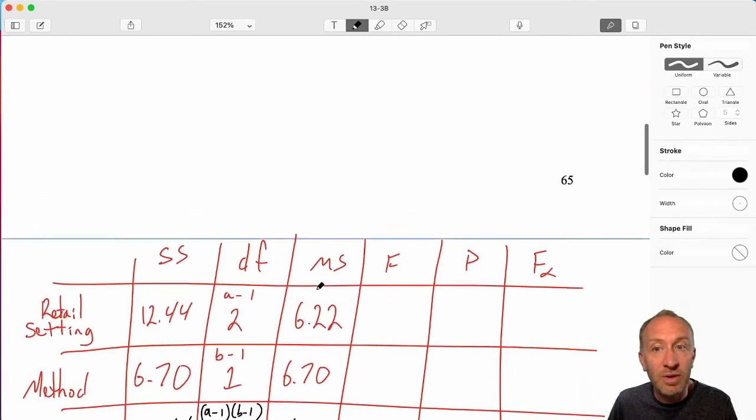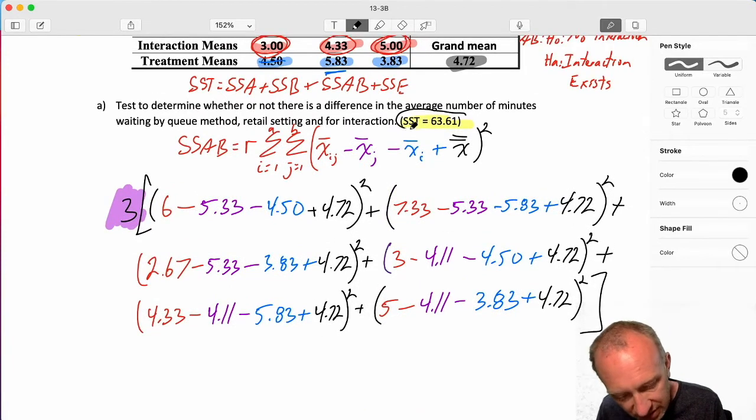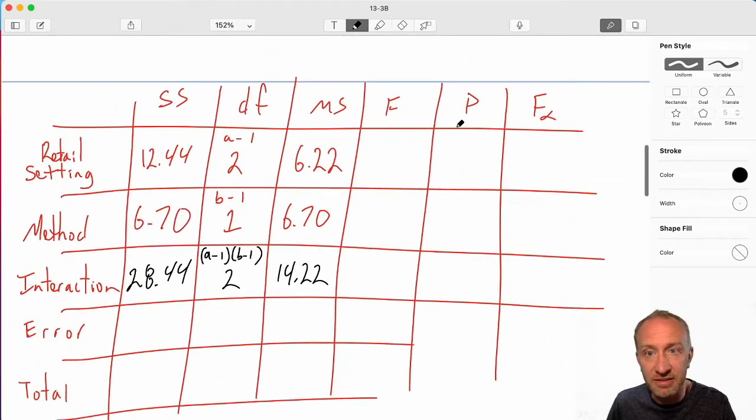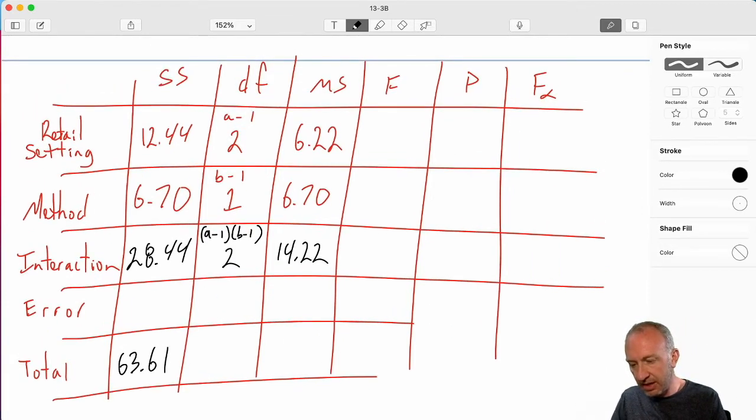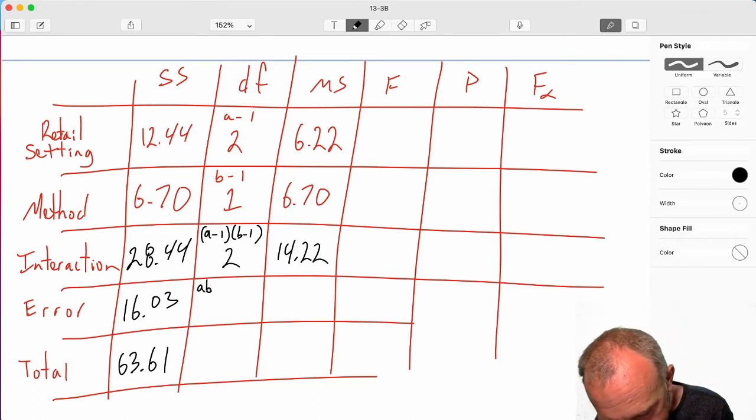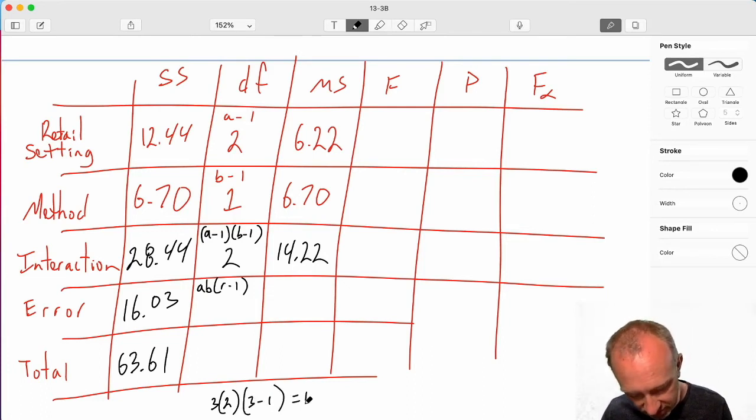Degrees of freedom here, A minus 1 times B minus 1. So that's going to give us 2. 28.44 divided by its degrees of freedom gives me 14.22. Next, we have error. Well, up here I have, remember, we were given SST, 63.61. So that's our SST. And now from that, if I take the total variation, and I subtract out interaction, subtract out method, subtract out retail setting, that gives me 16.03. Degrees of freedom, A times B times R minus 1. So A was 3. B is 2. R minus 1, 3 minus 1. So that's 6 and 2. That gives me 12. 16.03 divided by 12 is 1.34.